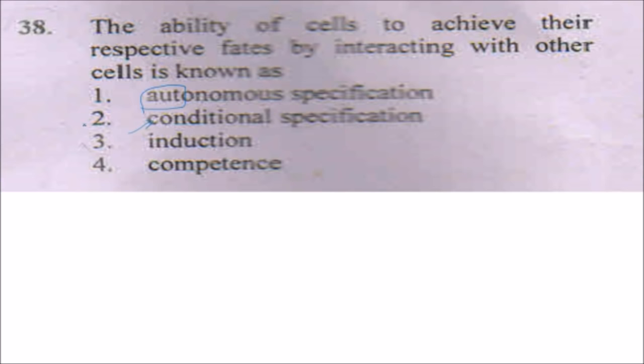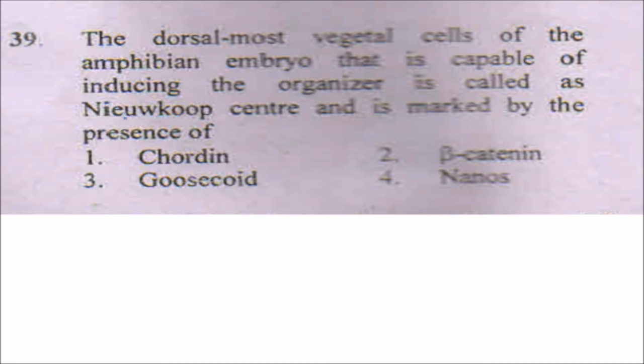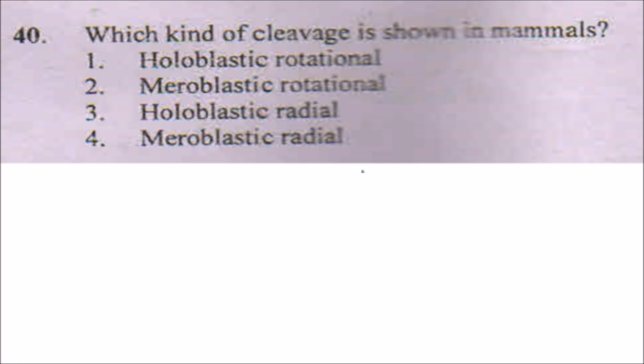The next question is: the dorsal-most vegetal cells of the amphibian embryo that are capable of inducing the organizer are called the Nieuwkoop center, and it is marked by the presence of beta-catenin. The next question asks which kind of cleavage is shown in mammals — it is actually holoblastic rotational cleavage.